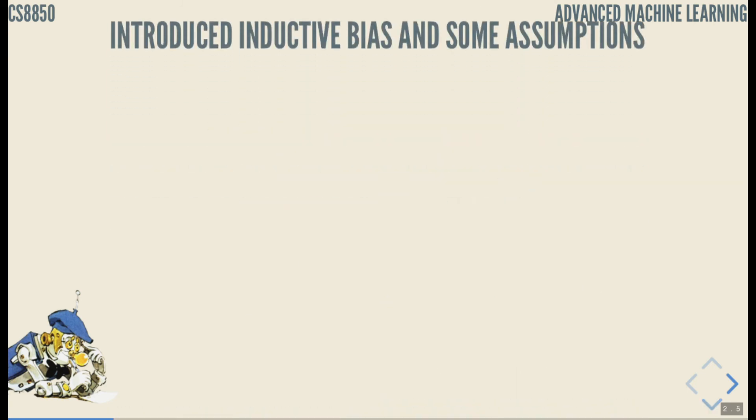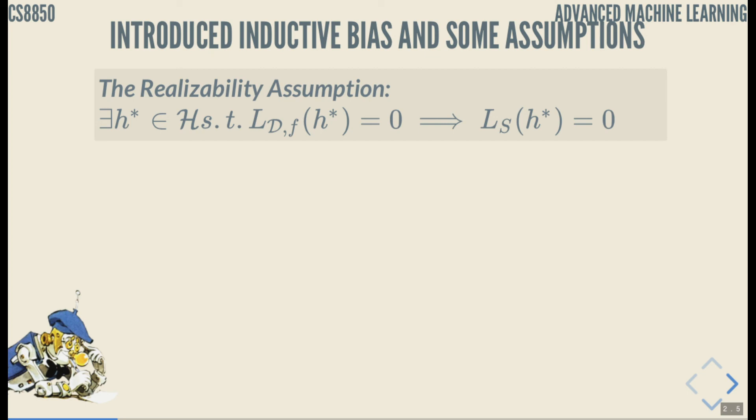We also introduced inductive bias and some assumptions. The important assumption is the realizability assumption. That means that we assume that there exists such a hypothesis h* among the set of possible hypotheses such that the true loss L_{D,f}(h*) is zero. That there is, basically it says there is a solution. And since there is a solution, that immediately means that for any subset, because this is for all data, for all possible samples, that means that for any possible training subset the loss will be zero.